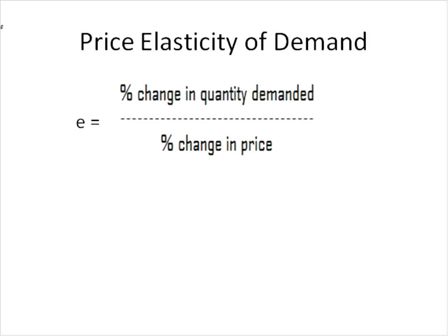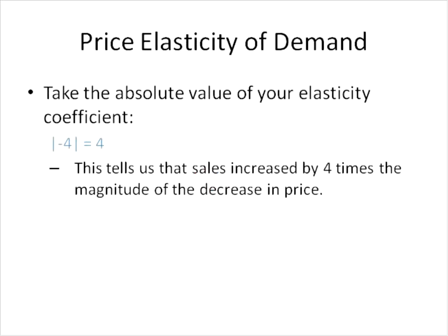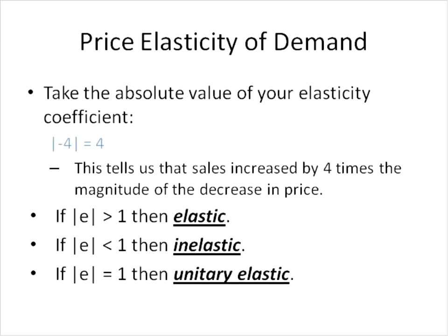We can calculate price elasticity more formally with a formula. The elasticity coefficient — lowercase e — equals the percentage change in quantity divided by the percentage change in price. Suppose you lower your price 2% and find that orders go up by 8%. Our elasticity coefficient then comes out to negative 4. Taking the absolute value gives us 4, which tells us that sales increased by 4 times the magnitude of the 2% decrease in price. If the absolute value of our coefficient is greater than 1, we say it is relatively elastic. If it's less than 1, it's relatively inelastic. And if it equals 1, we call that unitary elastic.